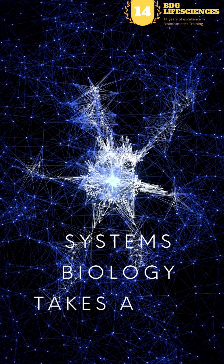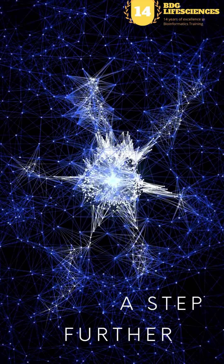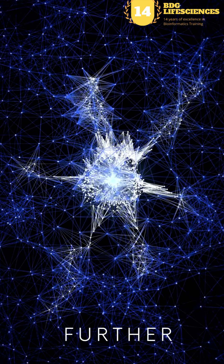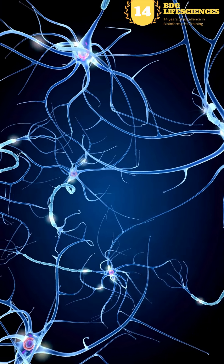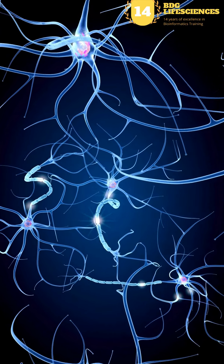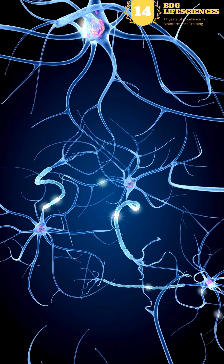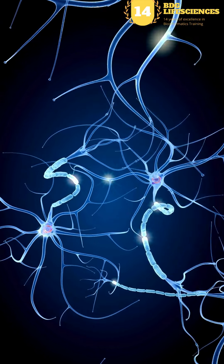Systems biology takes a step further. It treats the cell not as a collection of parts, but as a whole system. It's like studying not just the traffic lights, but the entire city's transportation network. This approach helps us understand how diseases arise from the interplay of many factors, paving the way for more effective treatments.